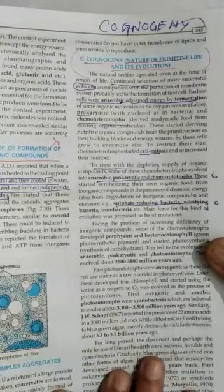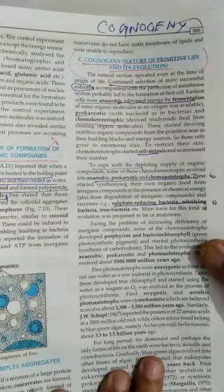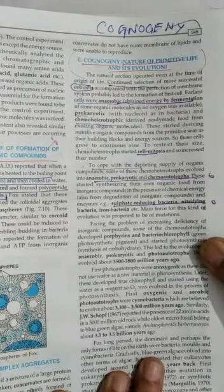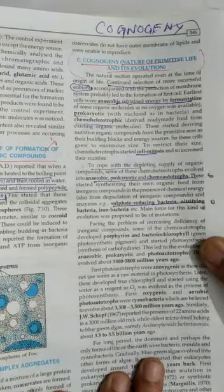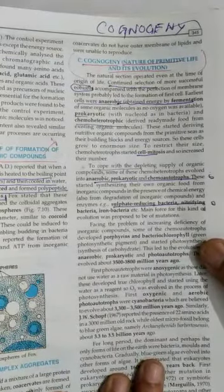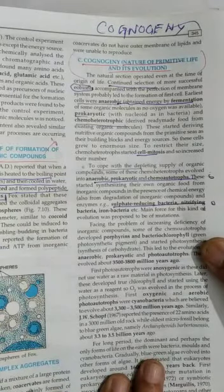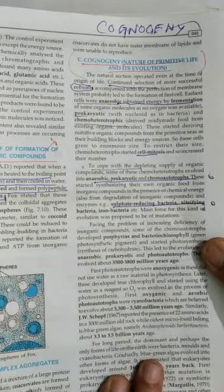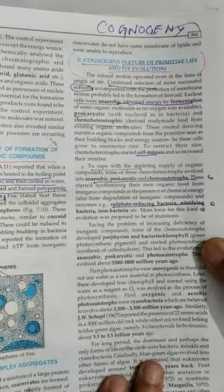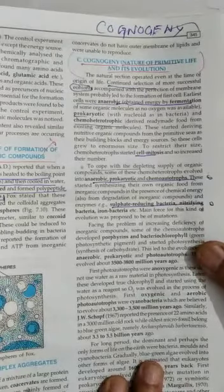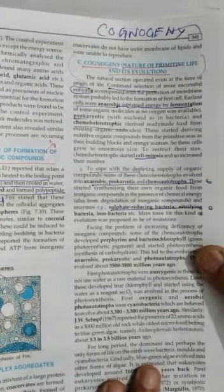Continued selection, eobions by anaerobic respiration, fragmentation, and prokaryotic condition, chemo-heterotrophic, and derived ready-made food from existing organic molecules. Photo-autotrophic were not formed. They were chemo-autotrophic, getting energy from chemical molecules. Mitosis was there.